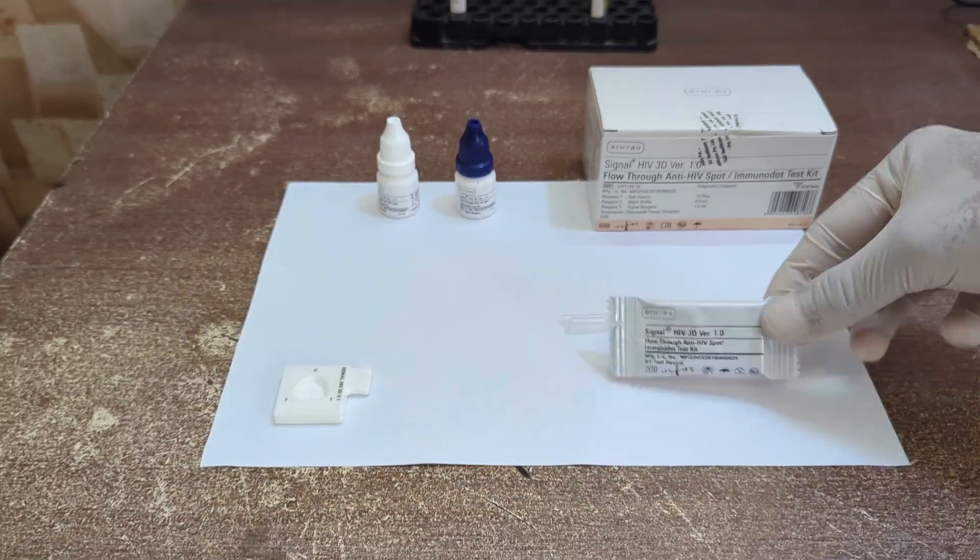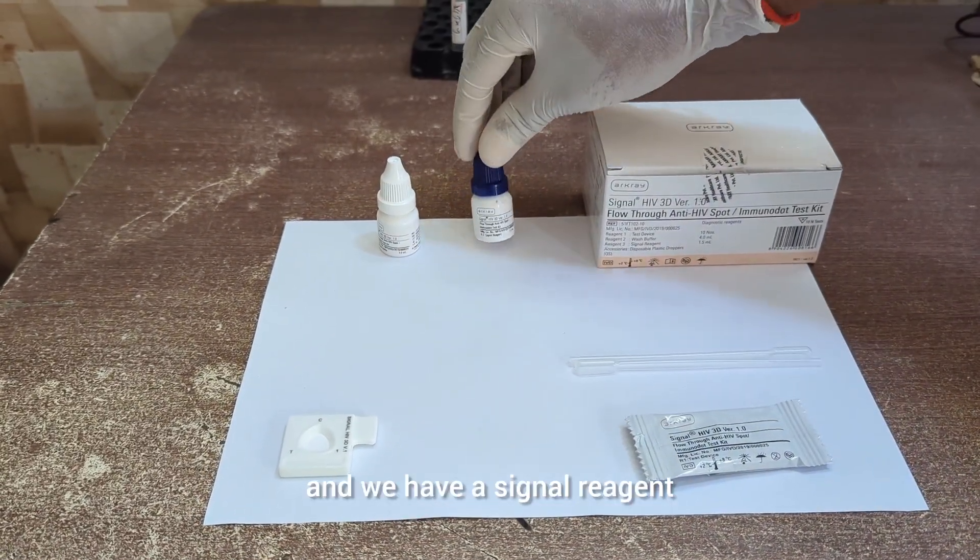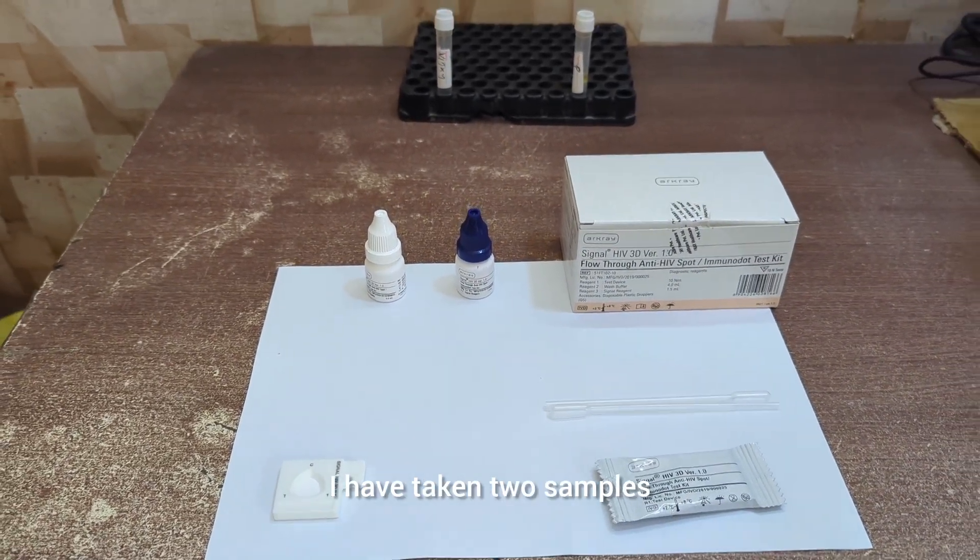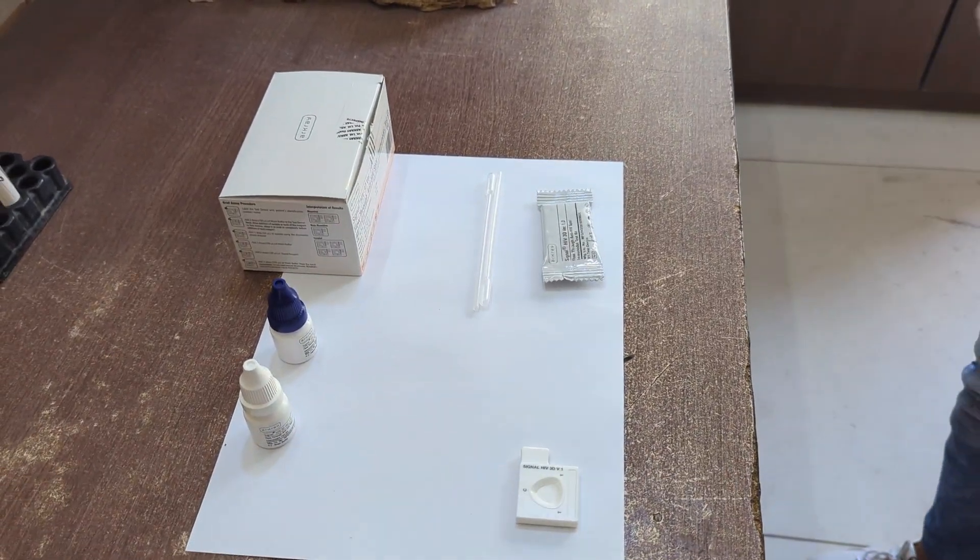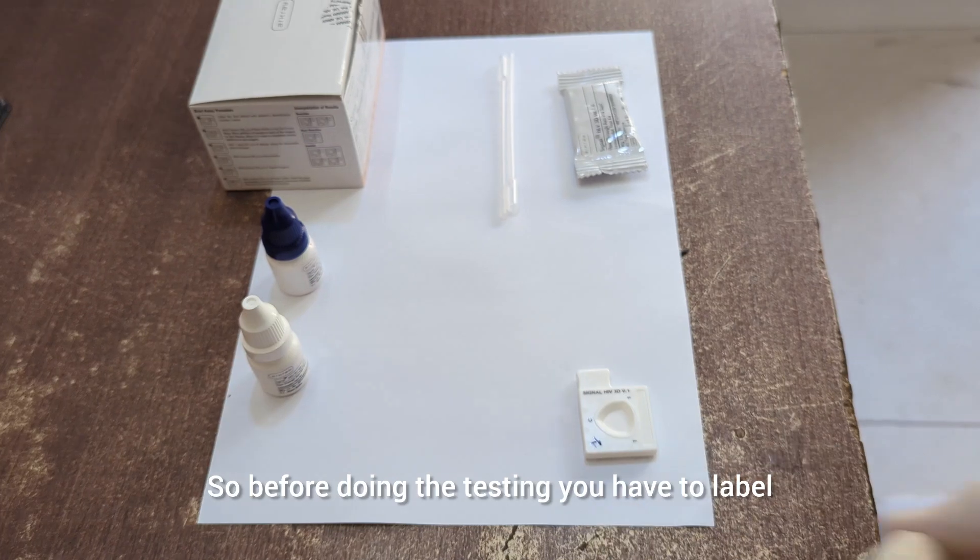In the box we have a test kit, a wash buffer, and a signal reagent. For better understanding, I have taken two samples: one is an HIV positive sample and another is an HIV negative sample. So I have taken two test kits.